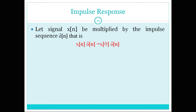We can easily say this because delta of n is the impulse sequence at n equal to 0. If we multiply x of n — which has many values at different places of n — with delta of n, then at every value of n other than n equal to 0, the result will be 0, because delta of n is 0 for all n other than 0.